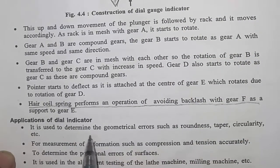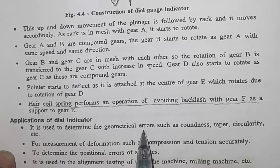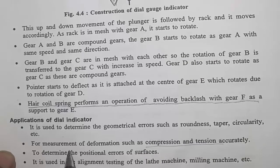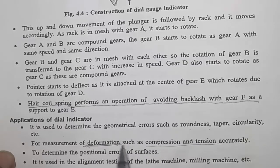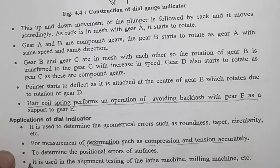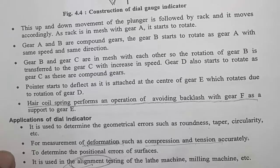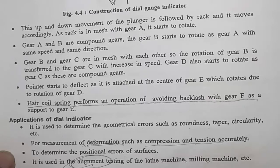Applications of the dial indicator: it is used to determine geometrical errors such as roundness, taper, and circularity; for accurate measurement of deformation such as compression and tension; to determine positional errors of surfaces; and for alignment testing of lathe machines, milling machines, etc.